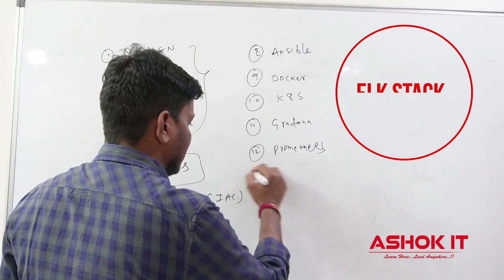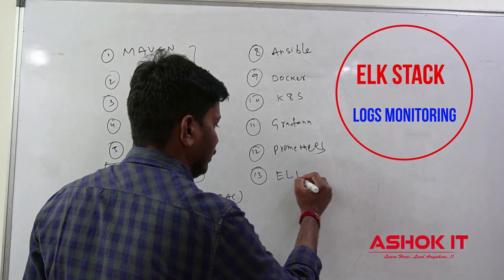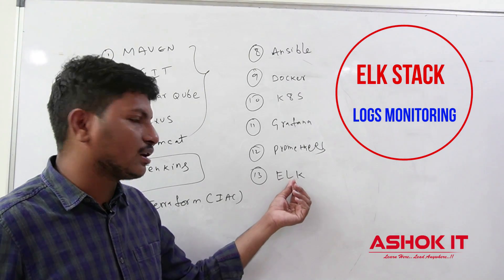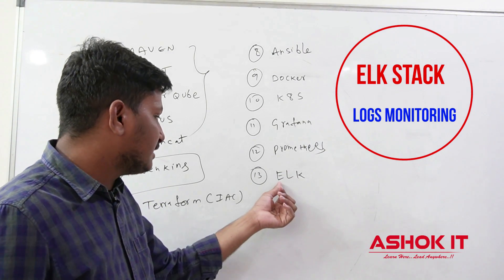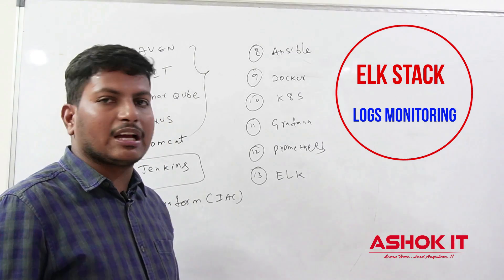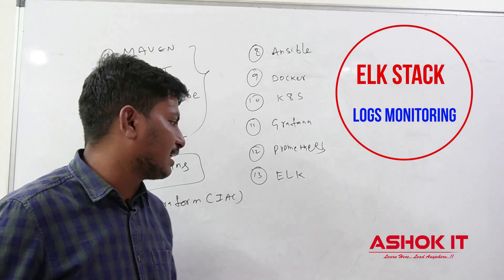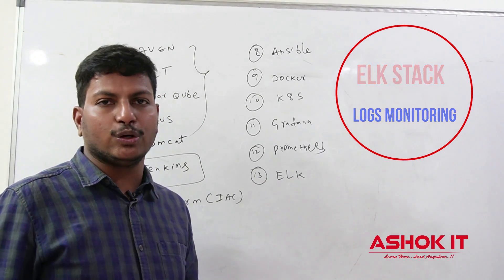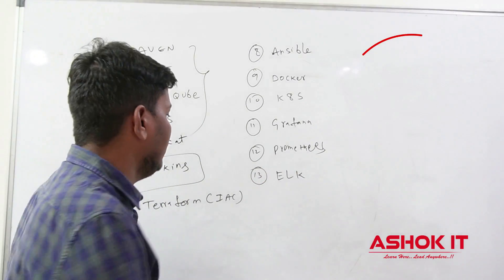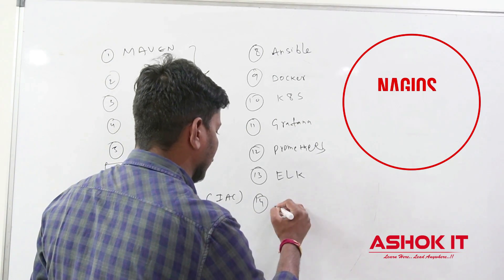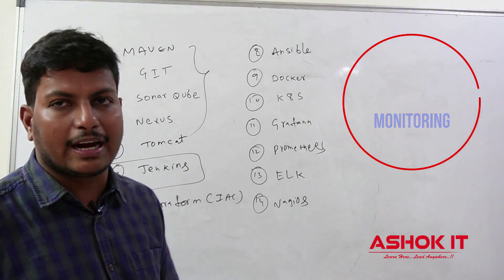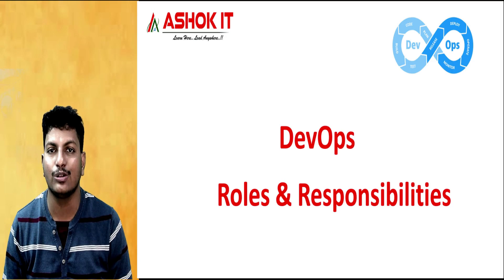And next one, for application logs monitoring, we are going to use ELK. ELK is the combination of three products: Elasticsearch, Logstash, and Kibana. Elasticsearch is used to store the logs. Logstash will collect the logs from all the nodes in the cluster and store them in Elasticsearch. Kibana will provide the UI to get the logs of our application. Along with these things, we are going to use Nagios. Nagios is used to monitor our application and application performance.